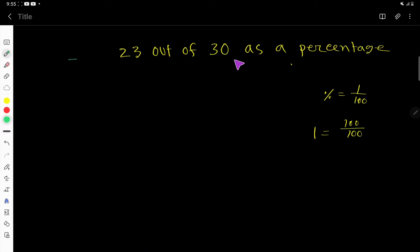23 out of 30 as a percentage. So let us translate 23 out of, means this fraction bar or division sign, then we have 30. That is, in this question we are asked to convert this fraction to percentage.